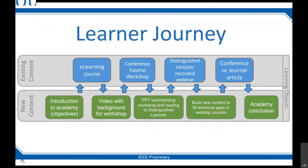Here's an example of a learner journey. It's a combination of existing content — we have some e-learning courses, TAB has a bunch as well. There are many conference tutorials and workshops already available, distinguished lectures that have been recorded, and of course all the things in IEEE Xplore and our publications. To put it together in a course, we need to build some glue between these elements and fill in whatever gaps are needed to make it a seamless experience for the learner — so they know what they'll be achieving by the end and have a clear path to get there.